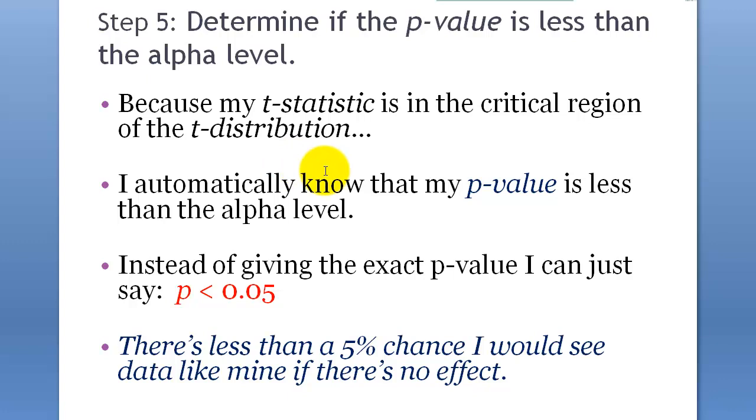We know that my p-value is less than the alpha level. Instead of giving the exact p-value, we can just say p is smaller than 0.05. And, because we don't know the p-value for that. We don't have the table to get the exact p-value for that t statistic. So, this is good enough.